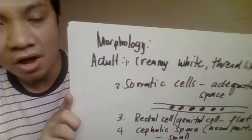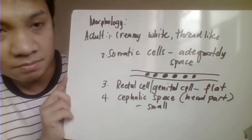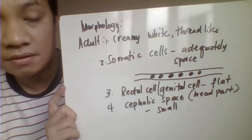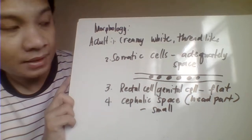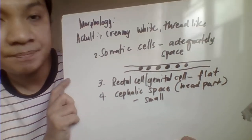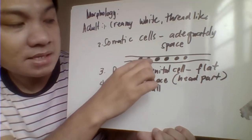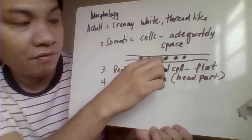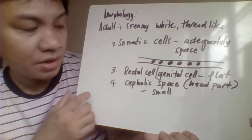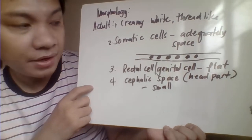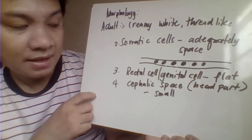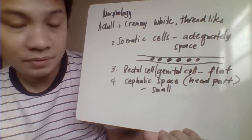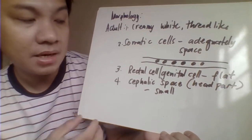For the morphology, adult worms follow the general characteristics of filarial worms: they are creamy white and thread-like. The somatic cells are adequately spaced — they are not overlapping one another. The rectal or genital cell is described as flat, and the cephalic space — the head part — is small.